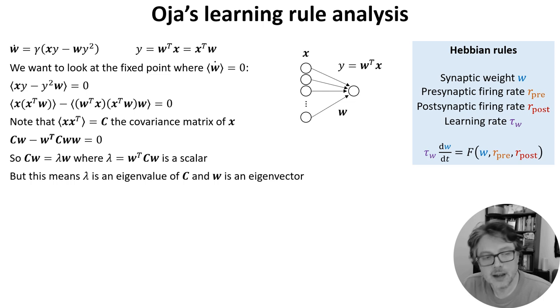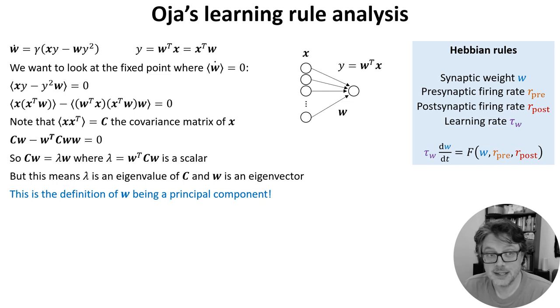But this means that lambda is an eigenvalue of C and W is an eigenvector. And this is exactly the definition of W being a principal component. In fact, you can show that Oja's rule will always converge to the first principal component, but that analysis is more complicated.